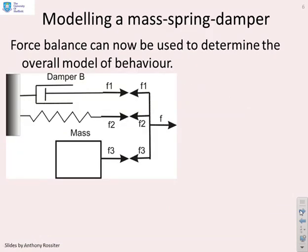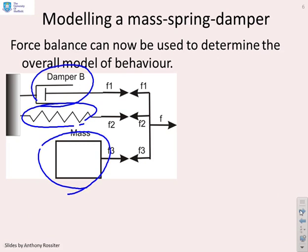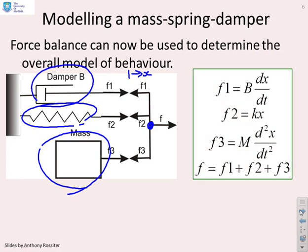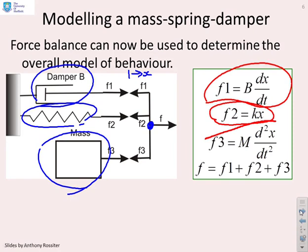We've got a damper, a spring, and a mass arranged in parallel — they all have the same displacement x, essentially joined together at a point. Therefore the applied force is distributed between the three components. The force in the damper: F1 equals B dx/dt. The force in the spring: F2 equals kx. The force accelerating the mass: F3 equals m d²x/dt².